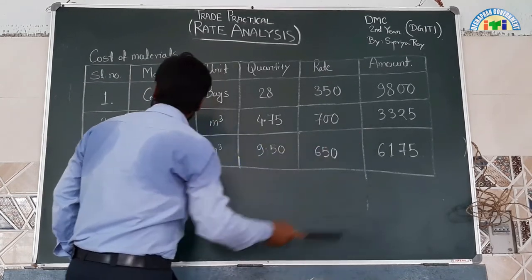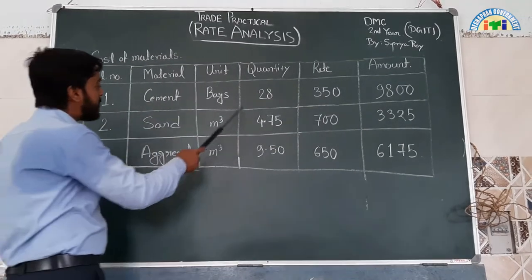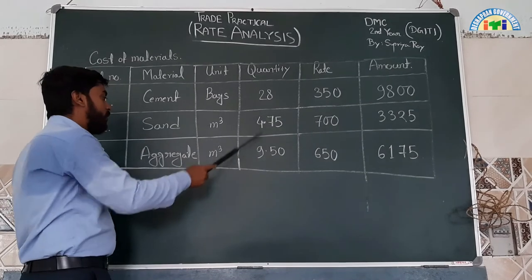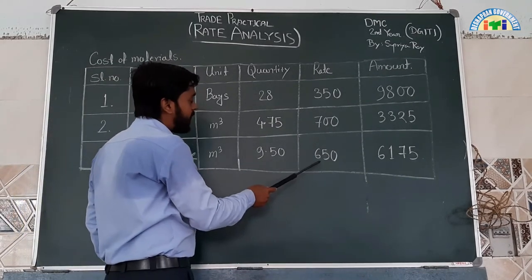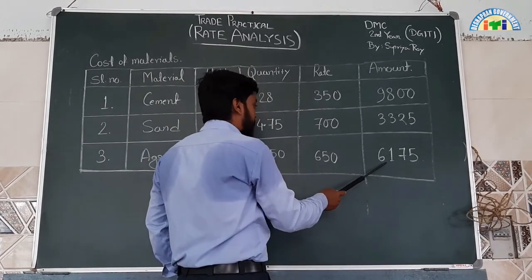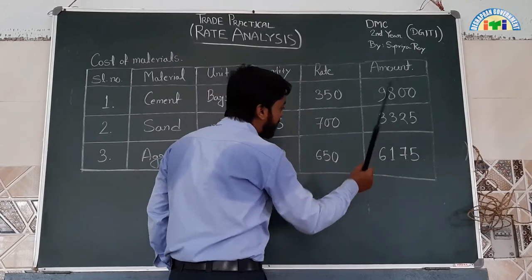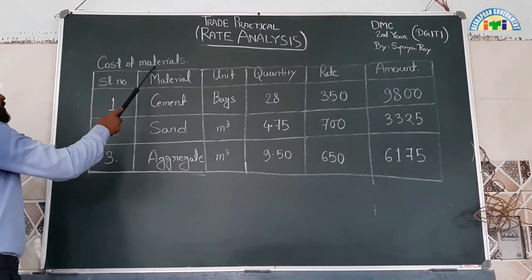Next is cost of materials. Mason will be 0.5 cubic meter at rate 650 rupees, total amount 175 rupees. Mason 1.5 cubic meter at rate 650 rupees, total amount 450 rupees. Mazdoor at 650 rupees, 2,340 rupees. Bhisti at 250 rupees, 600 rupees. And aggregate 9.5 cubic meters at rate 650 rupees per cubic meter, total amount 6,175 rupees.